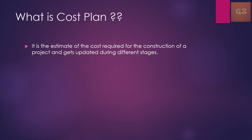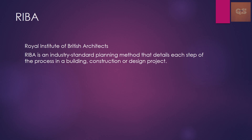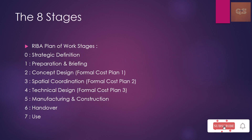As the stages move forward, the cost plan also gets updated as per the details available. Before seeing the stages, let's understand what RIBA is. The full form of RIBA is Royal Institute of British Architects. It is an industry standard planning method that details each step of the process in a building construction or design project. As per RIBA there are eight stages, and using these stages the cost plan is built.